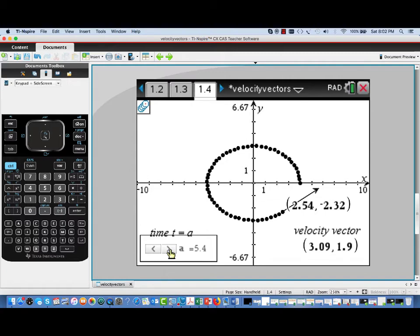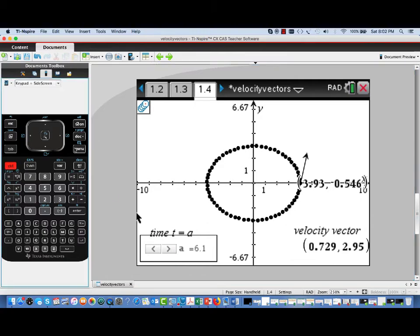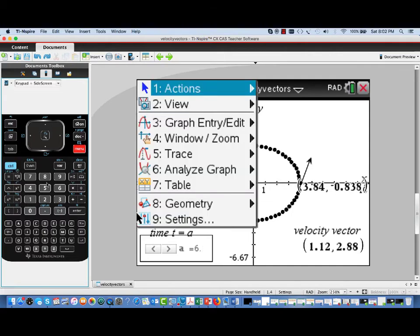So the velocity vector has both a direction and a magnitude. The direction is telling us the instantaneous direction that the particle is moving, and the length of the vector tells us the speed at which it's moving.